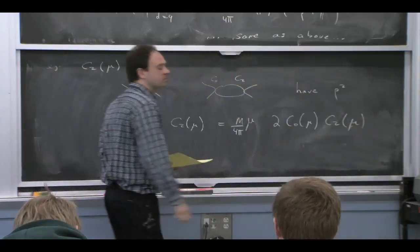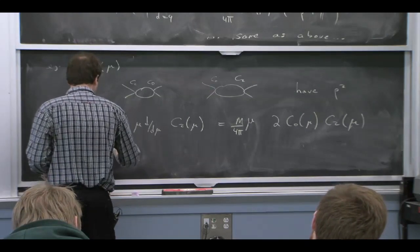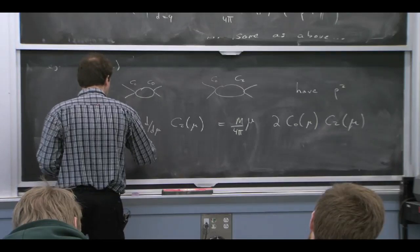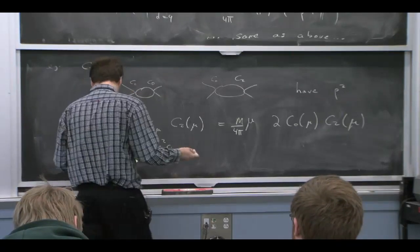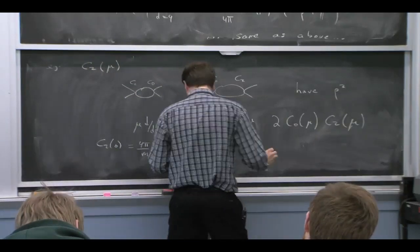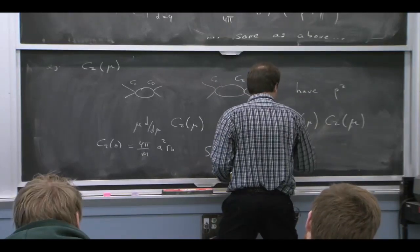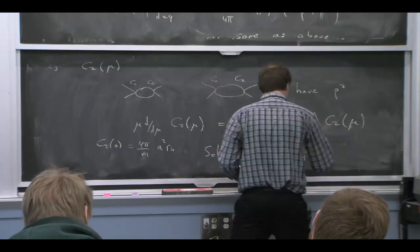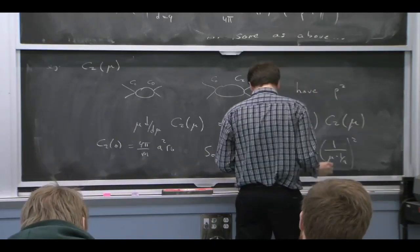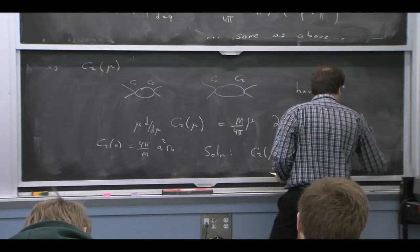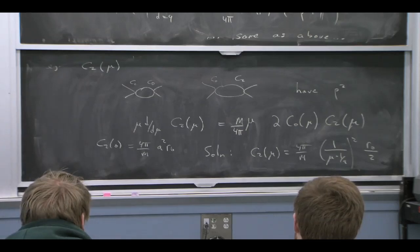It's that, 2 c0, c2. So if you take the boundary condition, c2 of 0, which is our MS-bar result, 4 pi over m, a squared r0, and you solve this, you find c2 of mu is 4 pi over m, 1 over mu, minus 1 over a squared, r0 over 2.